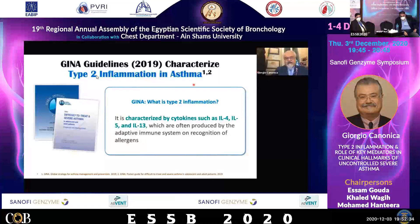Asthma as type 2 was defined by GINA as an inflammation that is characterized by cytokines such as IL-4, IL-5, and IL-13, which are often produced by the adaptive immune response or recognition of allergy.